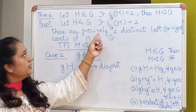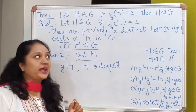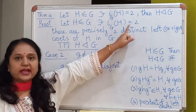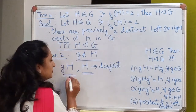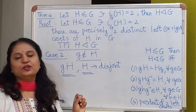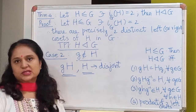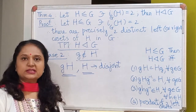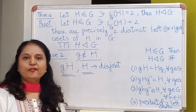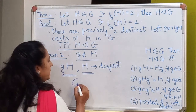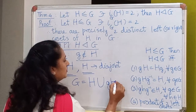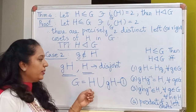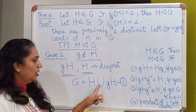Now I use the fact that the index of H in G is 2. There are precisely two distinct left cosets of H in G. These two cosets gH and H are different, and since there are precisely two distinct left cosets, it has to be these two. A group can be written as the union of all distinct left cosets of H in G, so G = H ∪ gH.